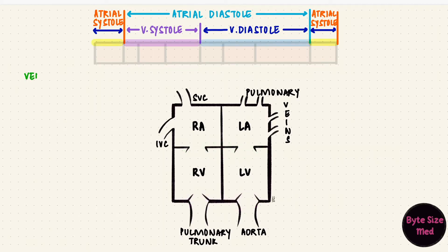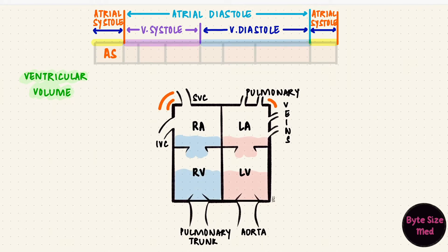Now let's see how the volume changes in the ventricles during the cardiac cycle. Let's start with atrial systole. The atria contract and the last bit of filling in the ventricles is complete. Since the ventricles are filling, the volume increases — a little bit, because this is just the last bit of blood that the atria are pushing into the ventricles.